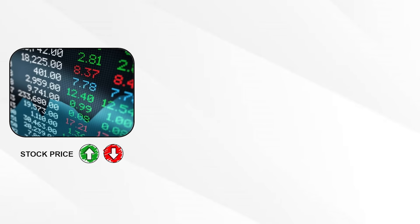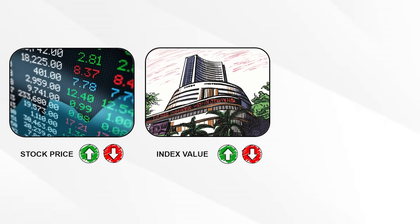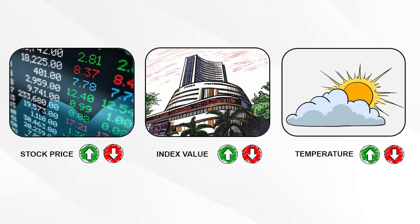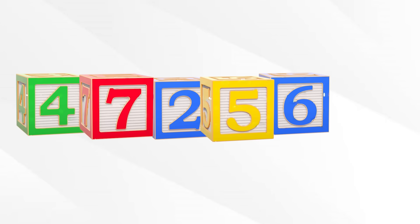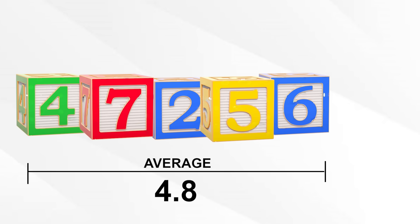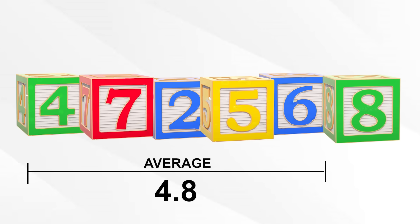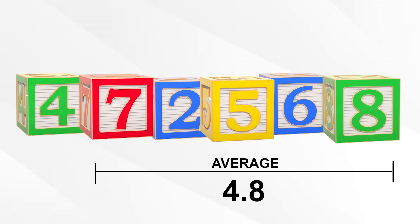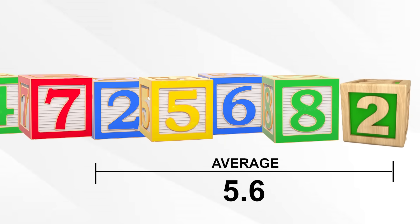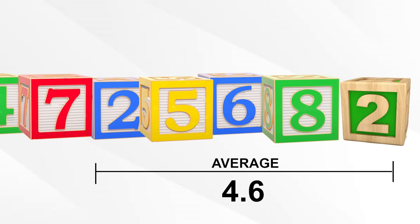What is moving average? Think of a stock price, an index value, or just about anything — including the sunny-to-cloudy weather in Delhi. Let's define it in terms of simple number boxes. There are five of them, and this averages to 4.8. But we're not talking about static averages — we're talking about moving averages. Now let's say a sixth box comes in, which means the calculation shifts from the second box to the sixth, and the average number is now 5.6. If the seventh box turns out to be a two, then the average will go down to 4.6.